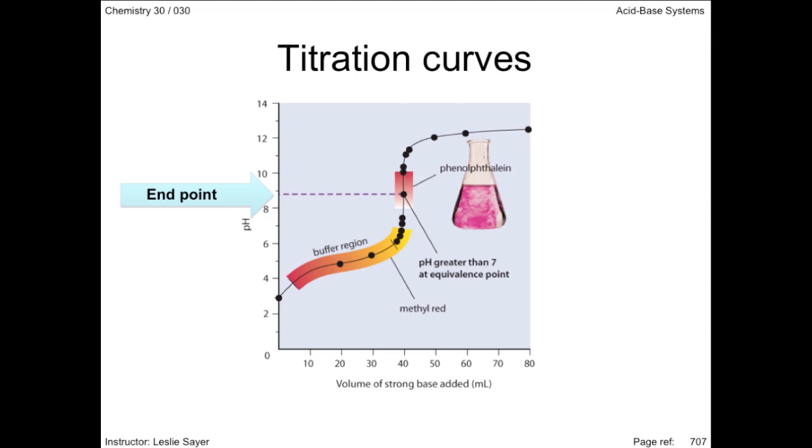Weak acid, strong base, endpoint equals pH greater than 7. And strong acid, weak base, the pH is less than 7.